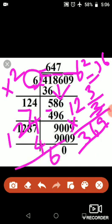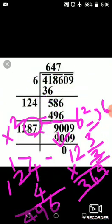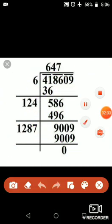124 into 4. 4, 4's are 16. Balance 1, 2, 4 is 8. 8 plus 1, 9. 1, 4 is 4. Therefore, the number is 496. 496 here, 586. So, 586 minus 496, we get 90. Subtract this, we have to get 90.